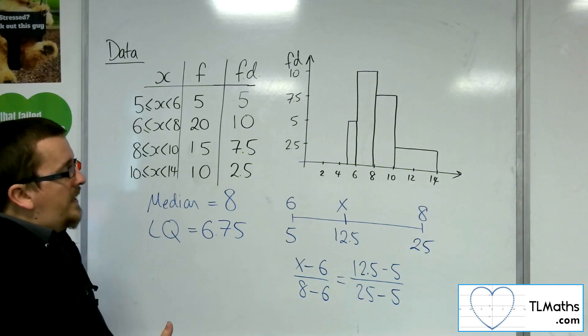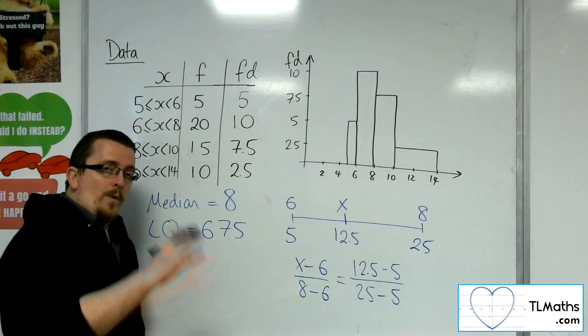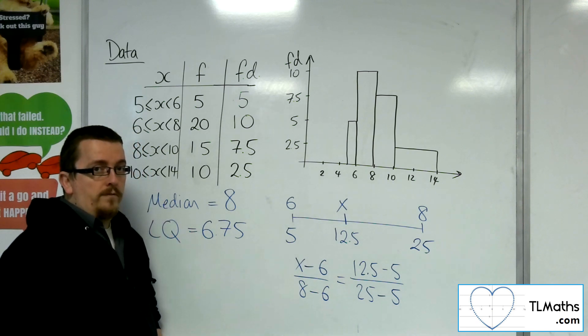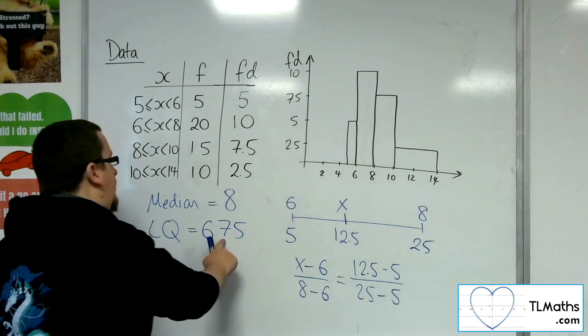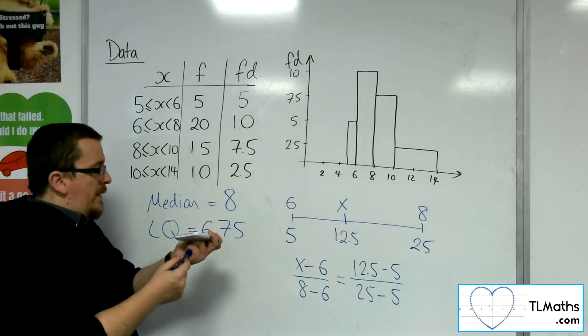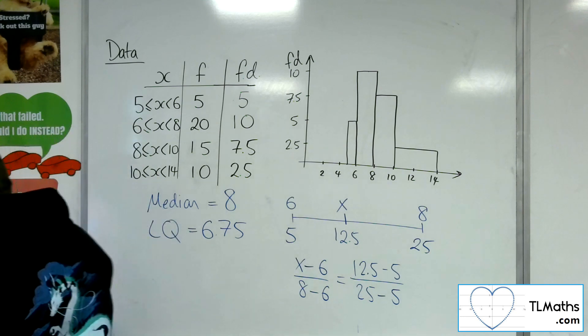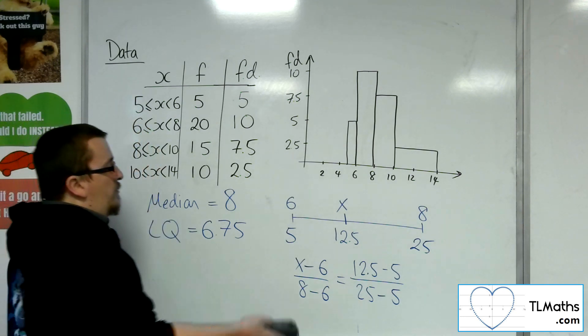Now, when we did it for the cumulative frequency, we estimated it to be 7. Really depended on the accuracy of the graph. So this is the interpolated result. And you might say a more accurate figure because it's reduced the error of the problem of drawing the cumulative frequency correctly.